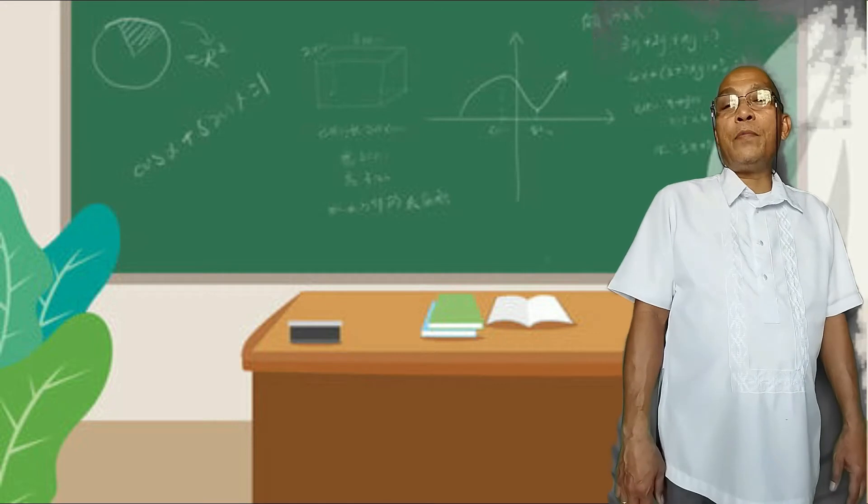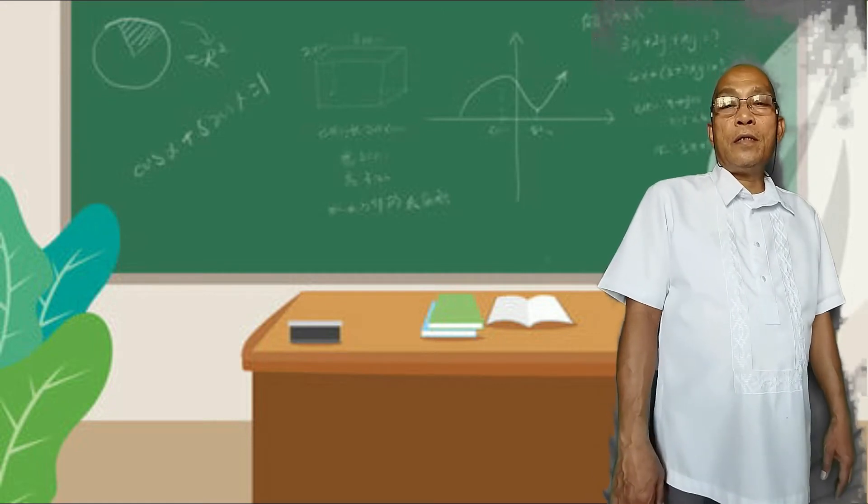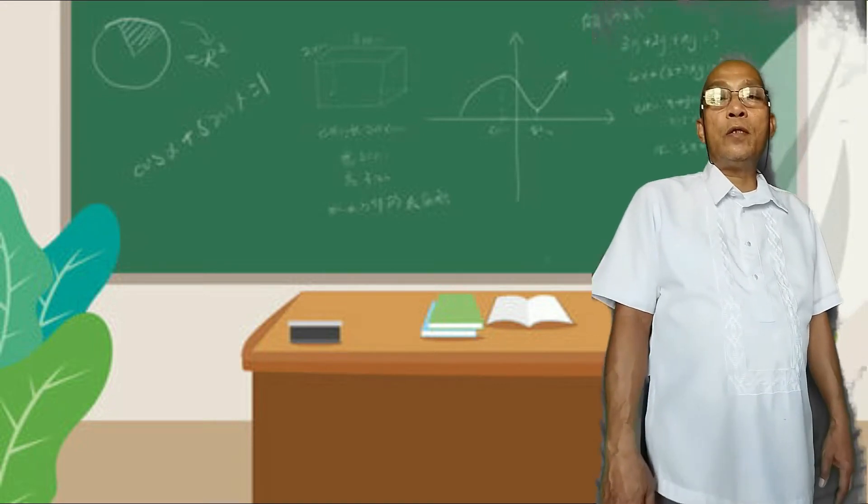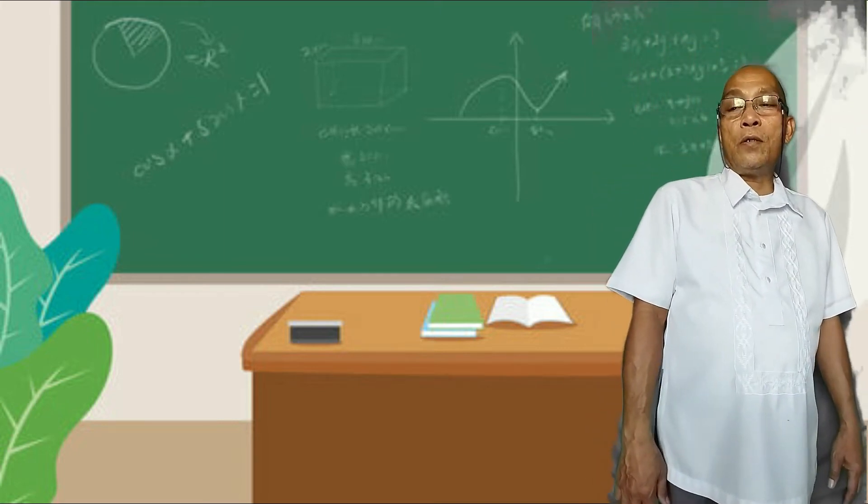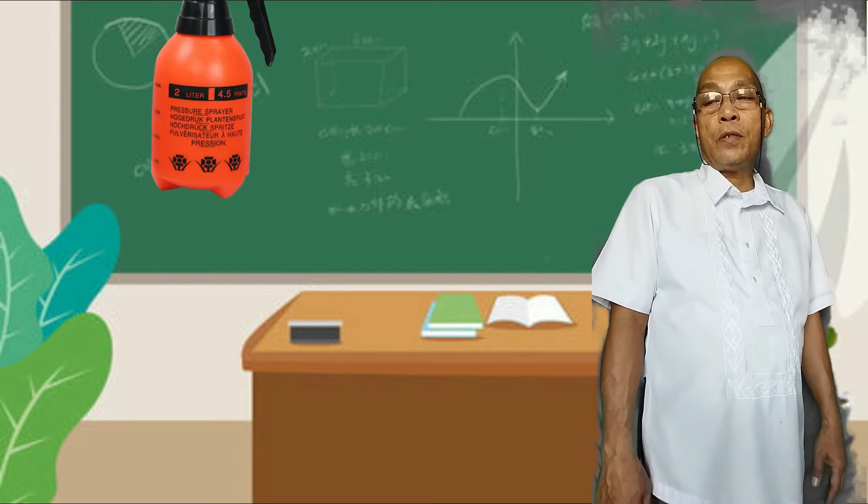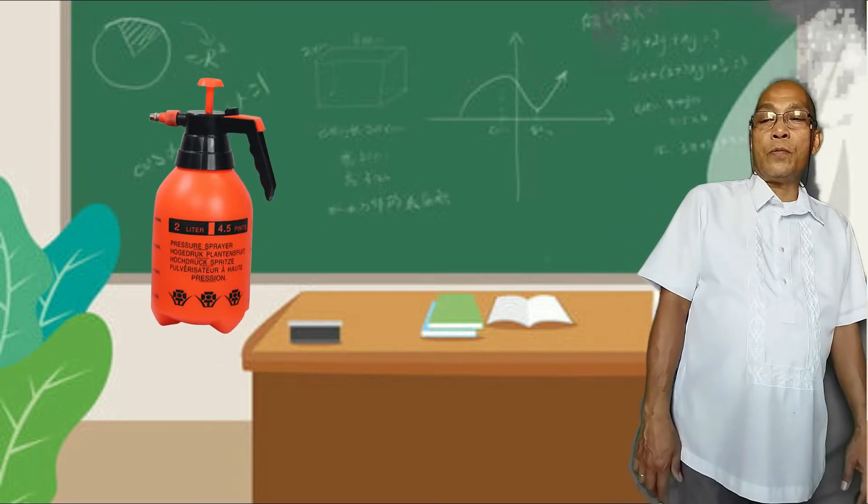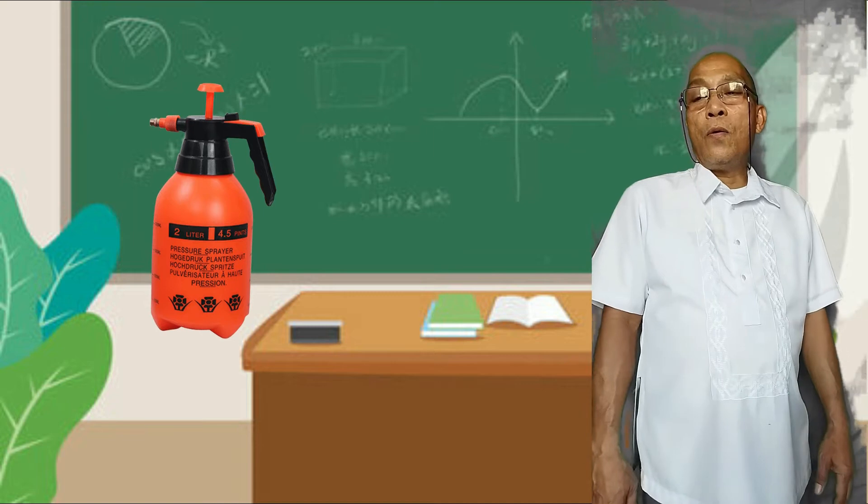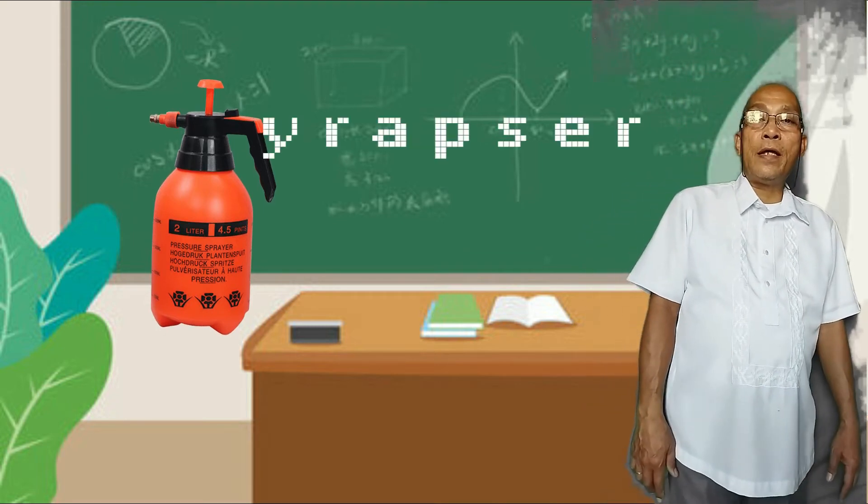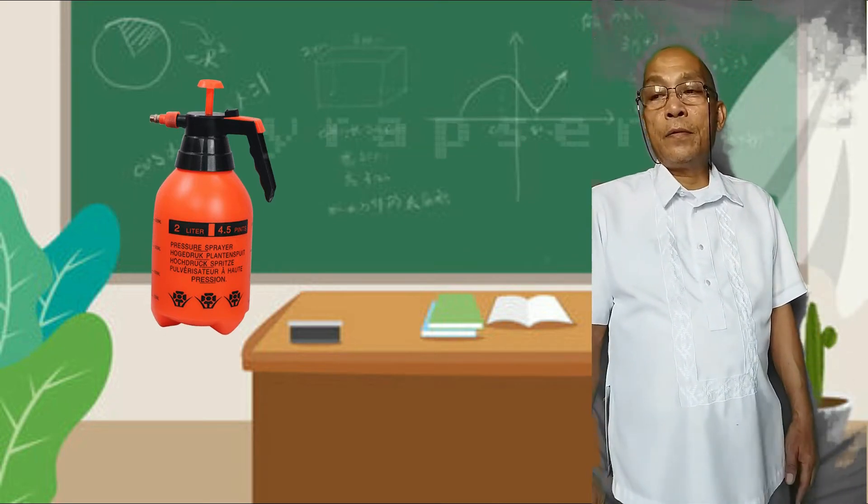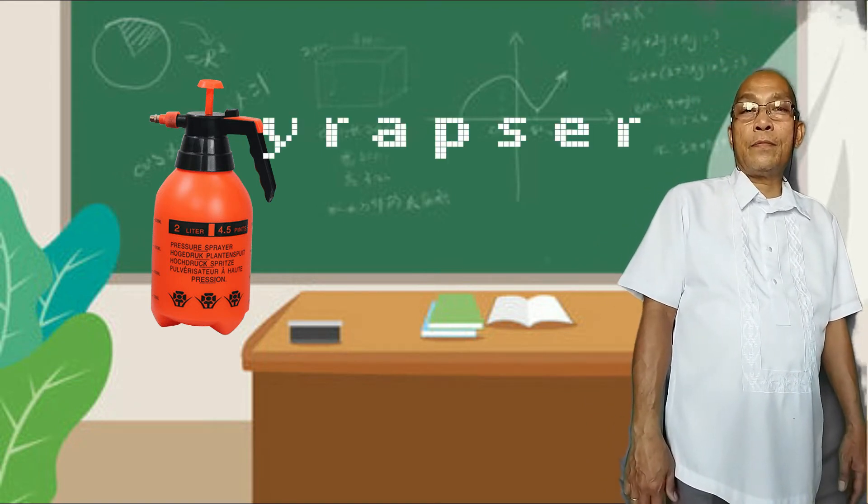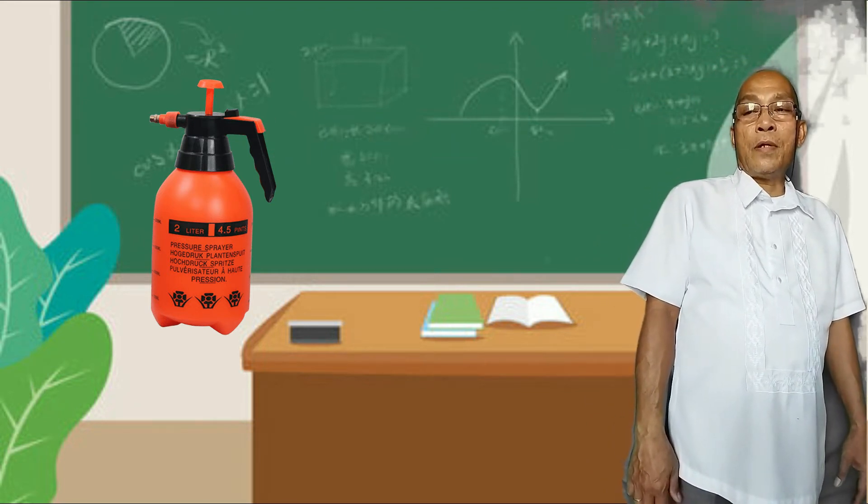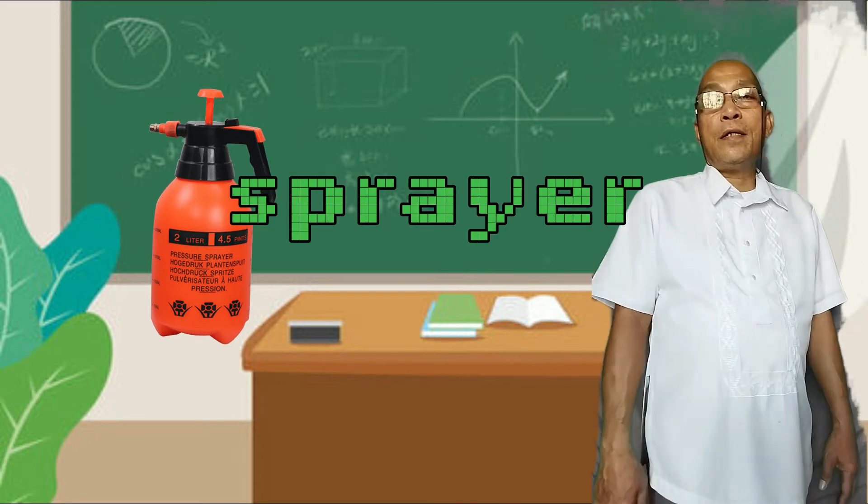This time, you are going to arrange the jumbled letters to form a word representing each picture. The first picture, take a look at this picture. The letters are Y-R-A-P-S-E-R. What is the word? The word is sprayer.